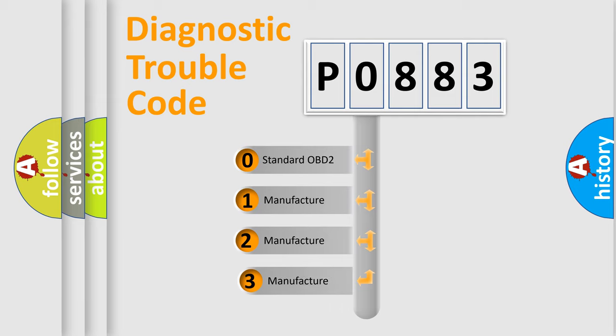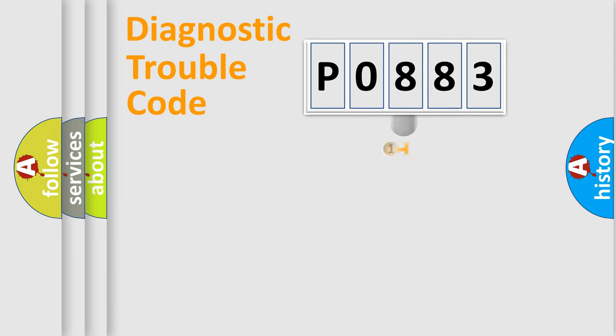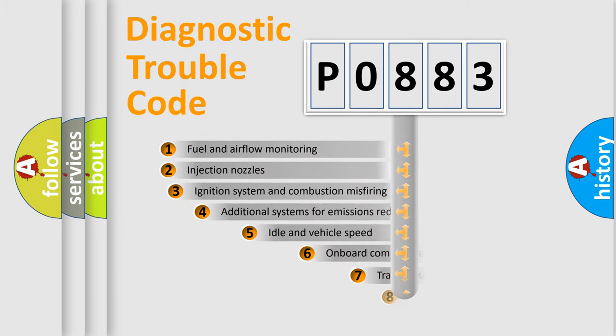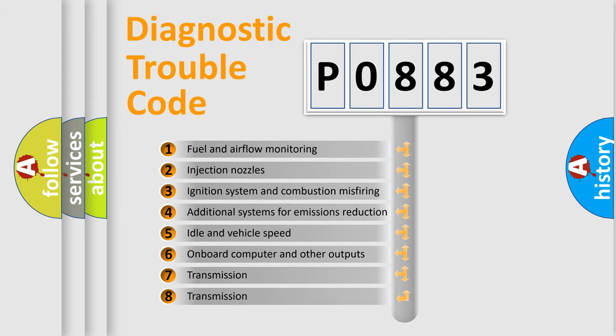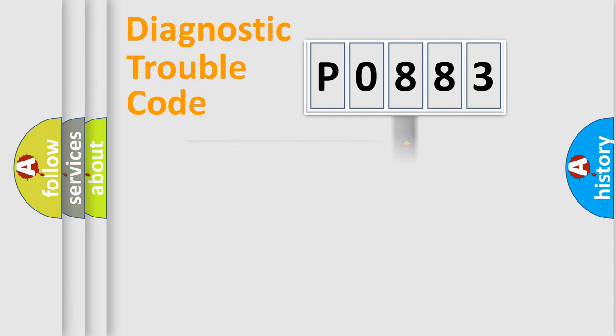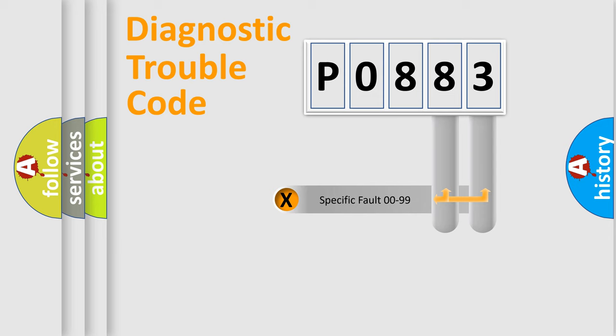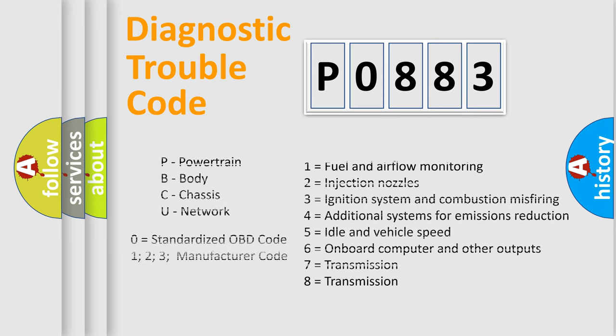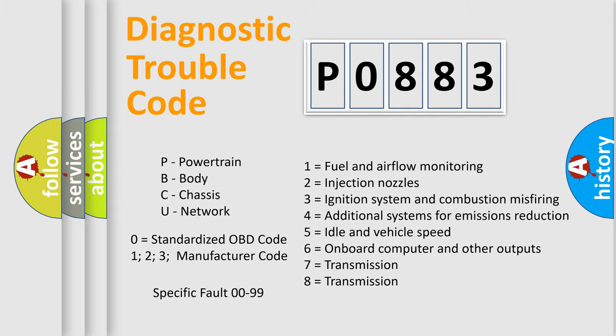If the second character is expressed as zero, it is a standardized error. In the case of numbers 1, 2, 3, it is a more prestigious expression of the car-specific error. The third character specifies a subset of errors. The distribution shown is valid only for the standardized DTC code. Only the last two characters define the specific fault of the group. Let's not forget that such a division is valid only if the other character code is expressed by the number zero.